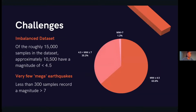The main challenge is essentially the extremely imbalanced data set. The earthquakes we're most interested in are the mega earthquakes, which occur at a magnitude above eight. For the sake of getting as much data as possible, we have the threshold set to seven. Of the 15,000 or so samples available, only about 300 are above a seven, about 30 are above an eight, and we have three above magnitude nine.